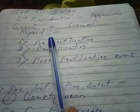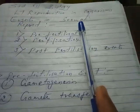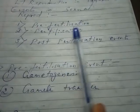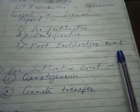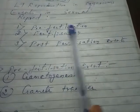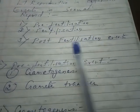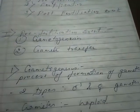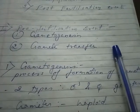Events in Sexual Reproduction. The events that take place in sexual reproduction are the pre-fertilization stage, fertilization stage, and post-fertilization events. Let us see these one by one. First, the pre-fertilization event.